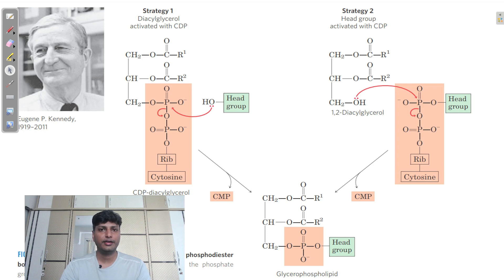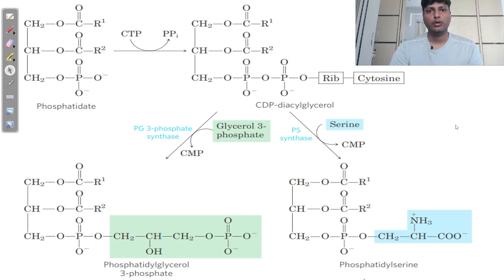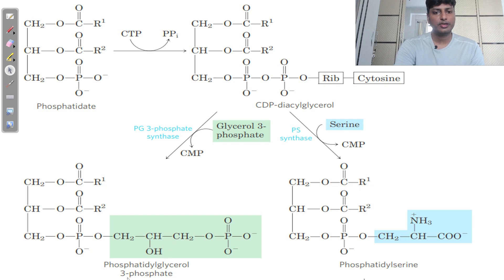In bacteria, once CDP-diacylglycerol is formed, addition of glycerol-3-phosphate with removal of CMP gives phosphatidylglycerol-3-phosphate. On the other side, if a particular amino acid — serine — is added, again with removal of CMP, the resulting structure is phosphatidylserine.